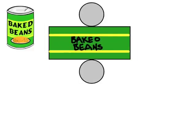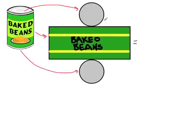Here we have the top of the cylinder, represented by this circle here. Here's the bottom circle. And we have this middle part here, which is a rectangle. So really, the net of this cylinder is made of two circles plus one rectangle.